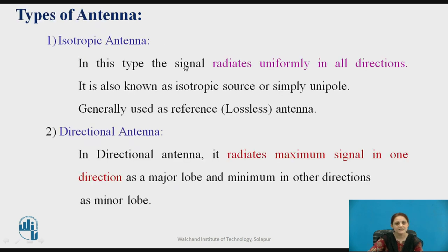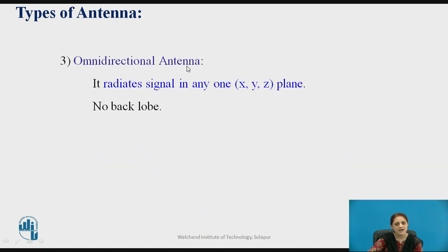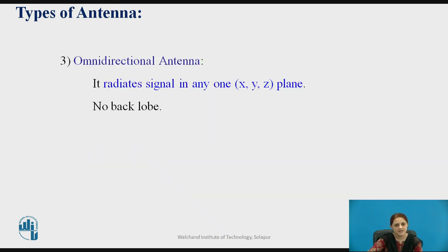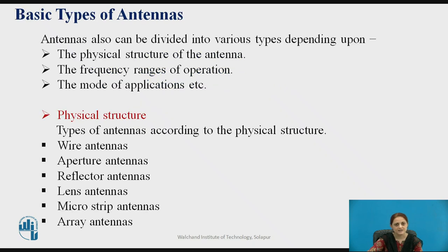There are mainly three types of antennas: isotropic antenna, directional antenna, and omnidirectional antenna. In an isotropic antenna, the signal radiates uniformly in all directions and it is generally used as a reference antenna. In a directional antenna, the signal radiates maximum in only one direction as a major lobe and minimum in other directions as a minor lobe. In an omnidirectional antenna, it radiates signal in only one plane — X, Y, or Z axis — and no back lobe is present. Antennas can also be divided depending on physical structure, frequency range, and mode of application.